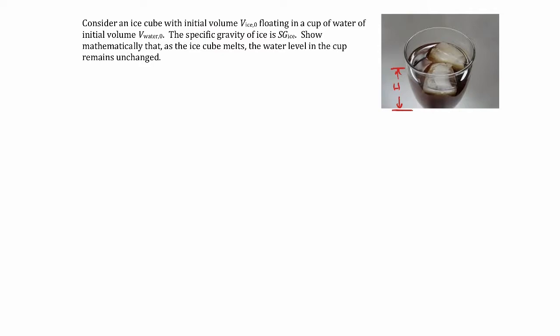We'll start with a conservation of mass statement. We're going to say that the change in mass of the liquid water will be equal to minus the change in mass of the ice. If we have some mass of ice that melts, delta m ice is negative, so throwing another negative in front of it gives a positive, corresponding to the mass of water we get. As the mass of ice melts, we get the same mass of water — just conservation of mass. We'll write that in terms of volumes, since our height is really related to volume.